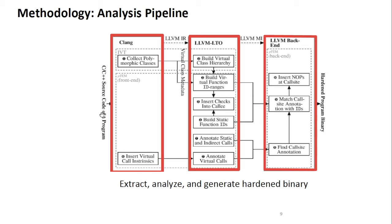Here we can see the architecture of our approach. We modify the Clang/LLVM compiler. On the left, we can see how a program is input in the front end of the compiler, where we collect some primitives and push them through the compilation pipeline. Here we build the class hierarchies, count how many parameters each function passes and their types, traverse the subclass hierarchies, and assign appropriate IDs. Then we put those IDs and checks in place in the back end of the compiler and release the hardened application.